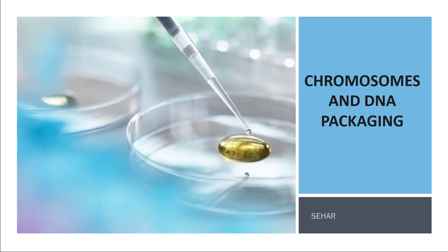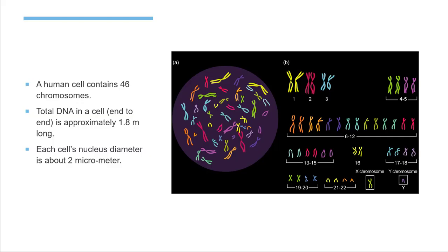Hi, this is Sahir from EZ PZ, and the topic we are going to discuss today is chromosomes and DNA packaging. A single human cell contains 46 chromosomes, or 23 pairs of chromosomes. If you take the DNA of all these chromosomes and join them end to end...